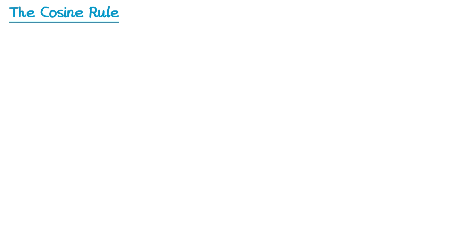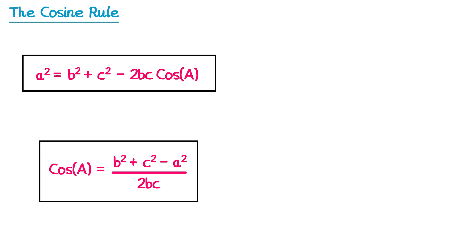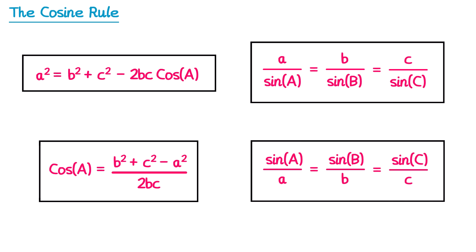So in this video so far we've looked at how we can use this version of the cosine rule to find a missing side, and also the rearranged version to find a missing angle. And in the previous video we used the sine rule to find a missing side, but also an alternative version of the sine rule to find a missing angle. Now something that students tend to find really difficult is to decide which of the rules they're going to use — is it the sine rule or the cosine rule, and is it for an angle or for a side? So I'm just going to run through briefly how you can determine which rule you need to use.